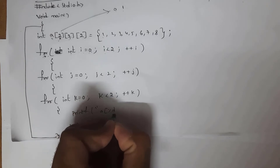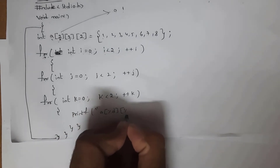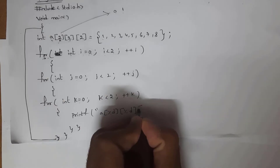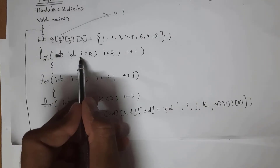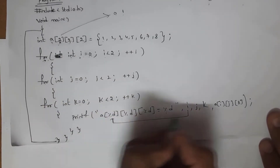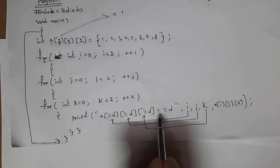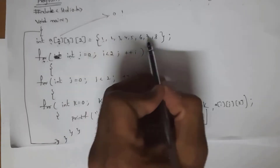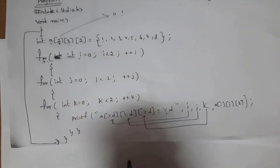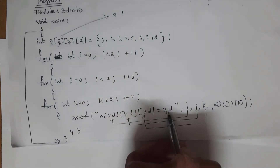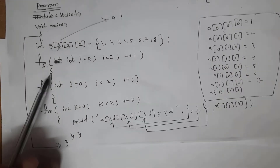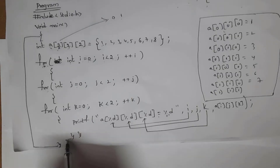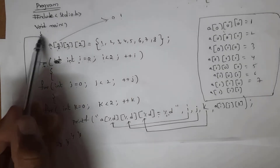Inside the innermost loop I written printf with format: a[%d][%d][%d] = %d, passing i, j, k, and a[i][j][k]. By writing this program I will get output showing all elements of the three-dimensional array. We opened three for loops so we need to close these three for loops, and the last curly bracket is for void main. This is how we write a three-dimensional array program.